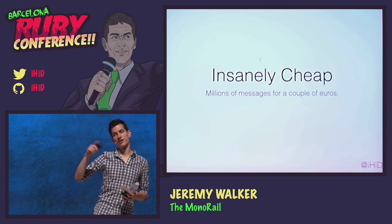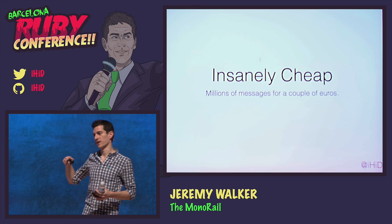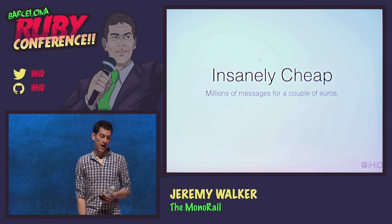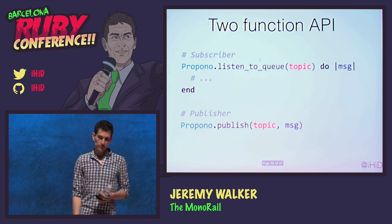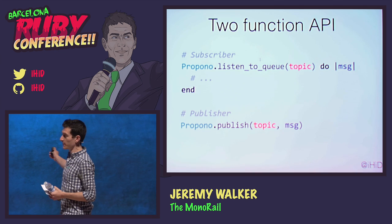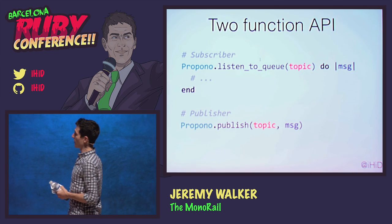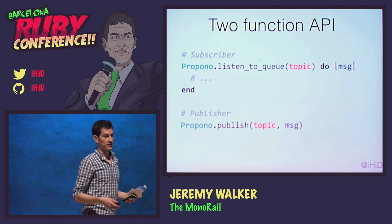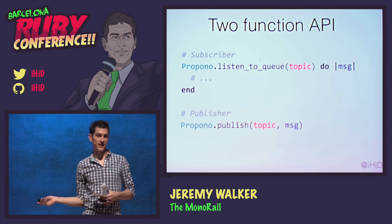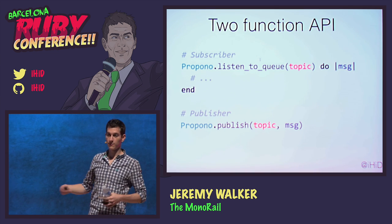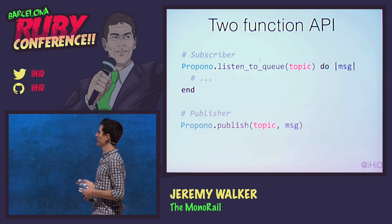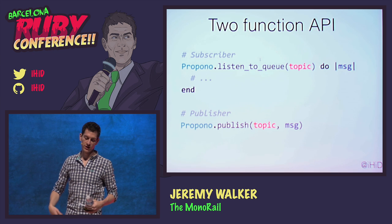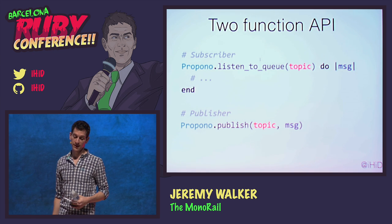There's no setup, it's instantly and in effect infinitely scalable on Amazon. It's as reliable as you can get, really fast, and insanely cheap. We send millions of messages between all our different services each month and it costs us a couple of euros. It's a two-function API: you have a subscriber that listens to queues on a topic, and every time a message appears it does something with it. And you have a publisher that publishes messages back onto that topic.